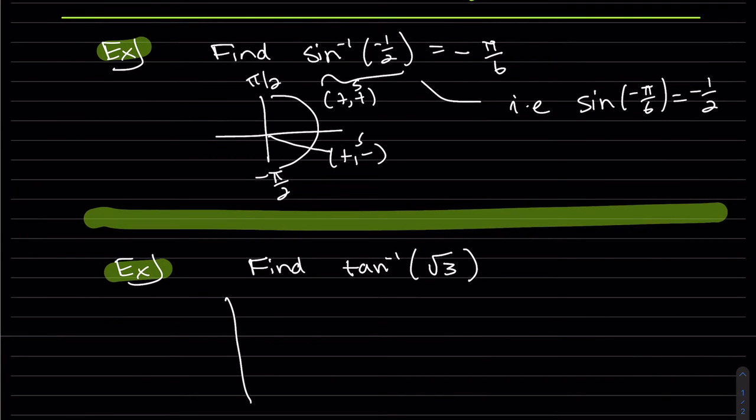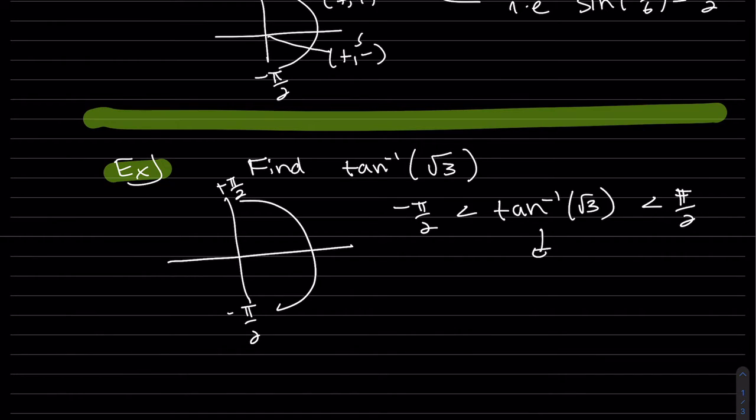Again, tangent is between the same two, but not including minus pi over 2 to pi over 2. That's where the answer, basically the range has to be between minus pi over 2 and pi over 2. So the answer, we're definitely...